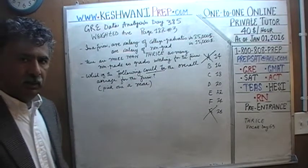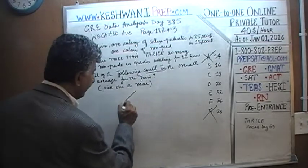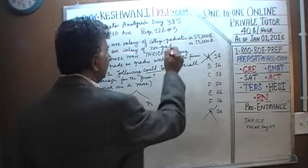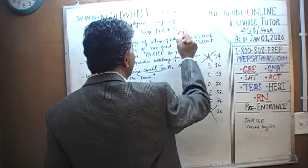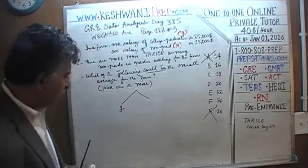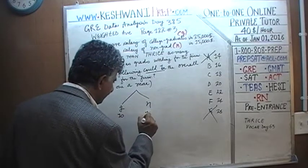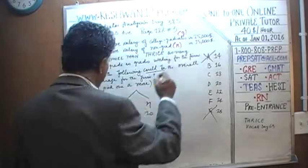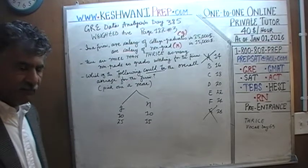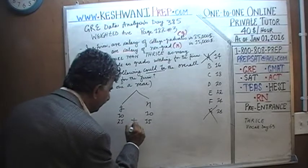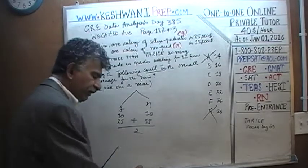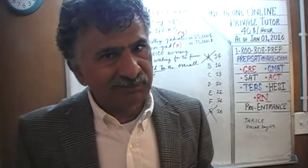Step two: if we had the same number of graduates and non-graduates — say, 10 graduates and 10 non-graduates — since their averages are $25,000 and $15,000 respectively, the overall average would simply be the average of those two numbers, which is exactly 20. That number falls exactly between 25 and 15.